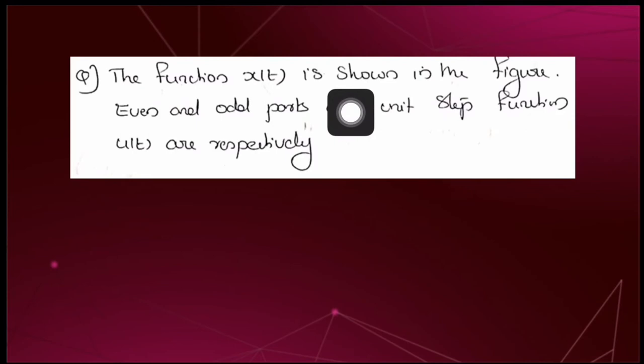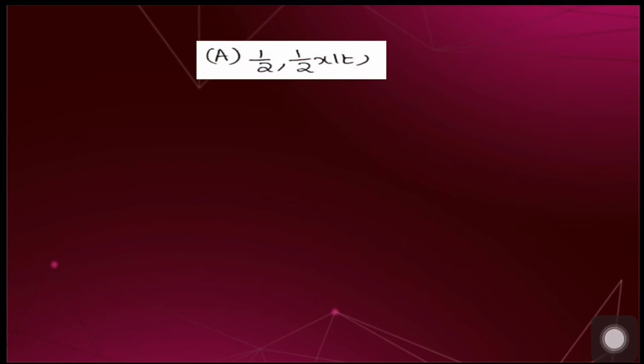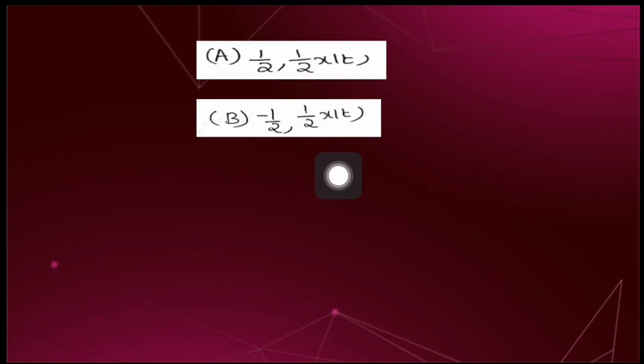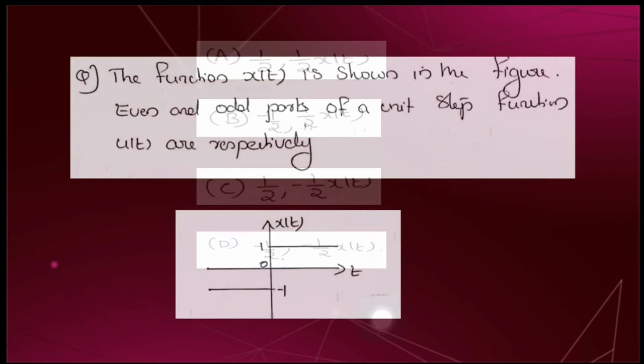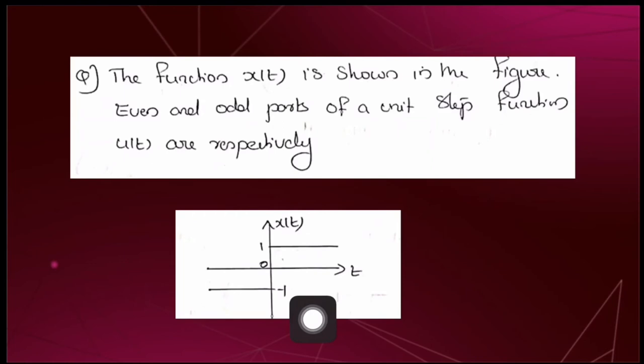Moving on to the next question. The function x(t) is shown in the figure. The even and odd parts of a unit step function u(t) are respectively: option A — 1/2 and 1/2 x(t); option B — −1/2 and 1/2 x(t); option C — 1/2 and −1/2 x(t); option D — −1/2 and −1/2 x(t). Here we have a continuous time signal x(t) and we are asked to find the even and odd parts of u(t) in terms of x(t).